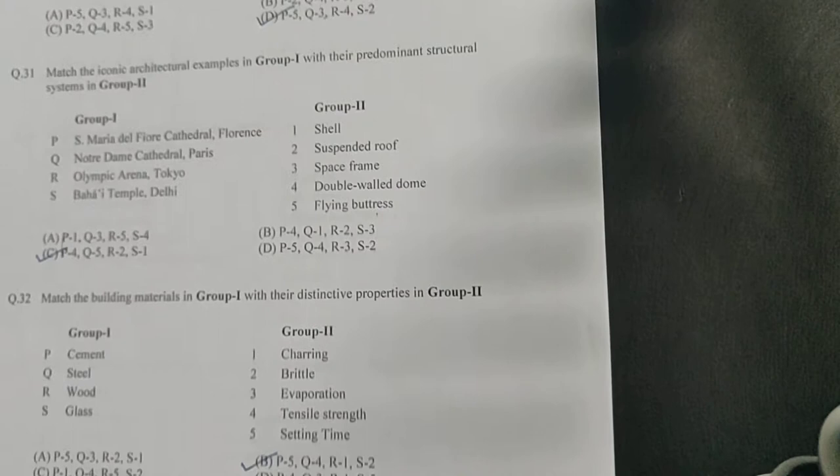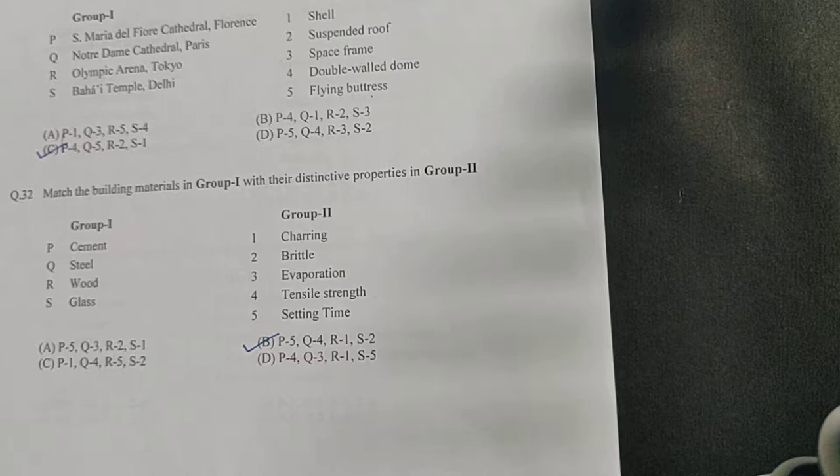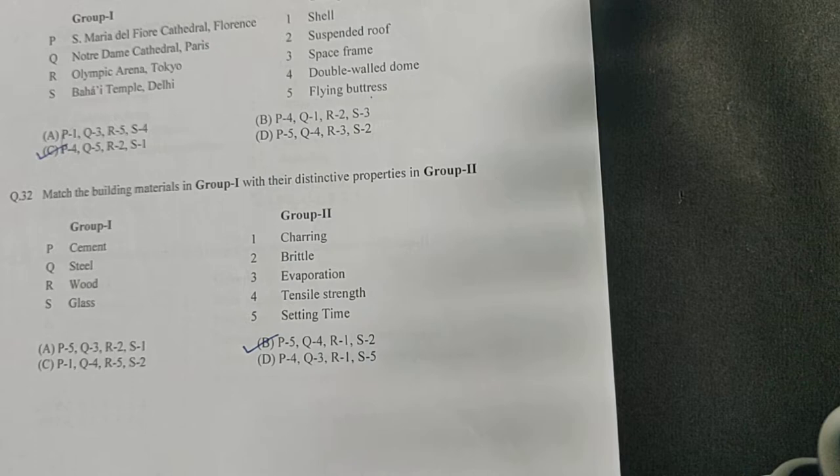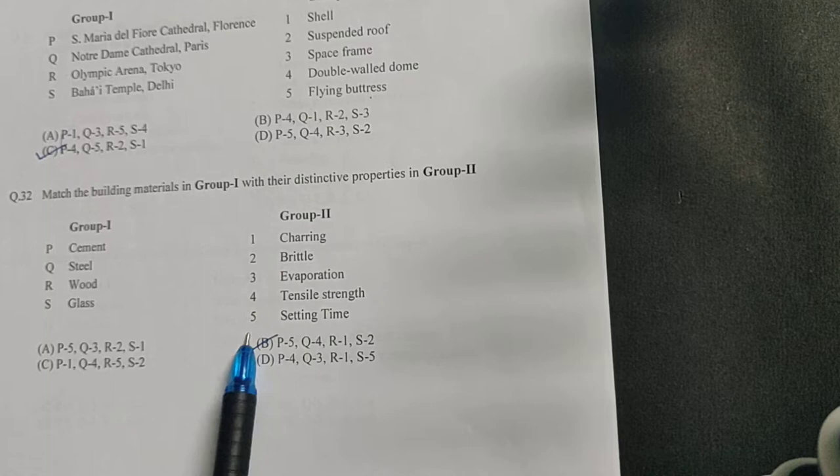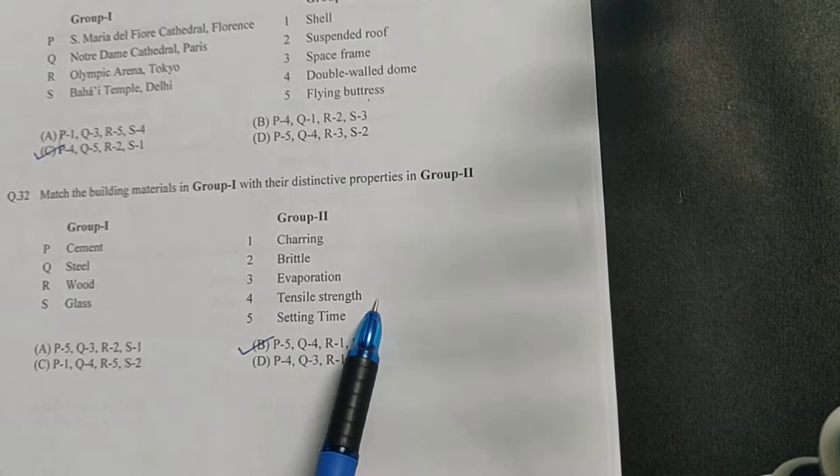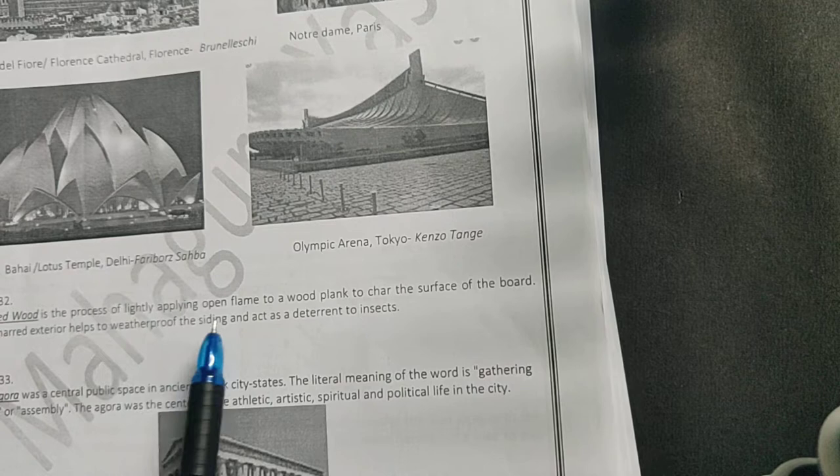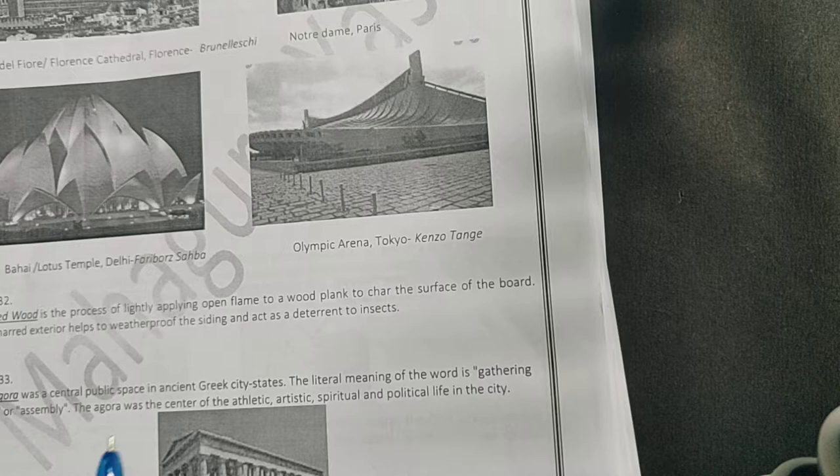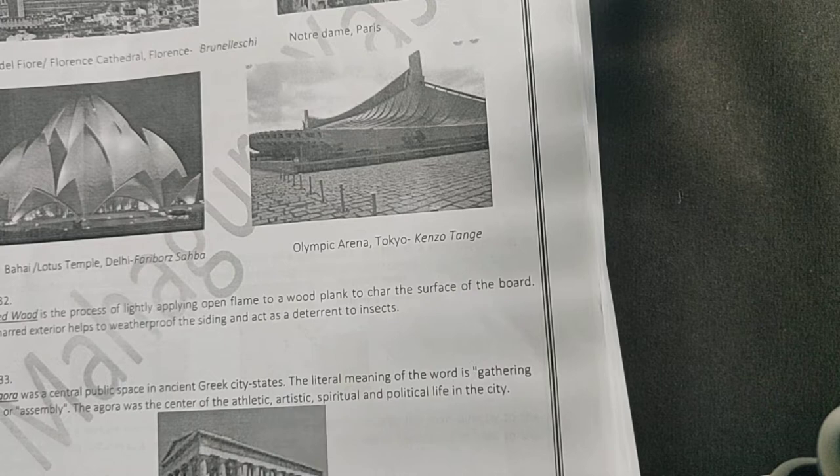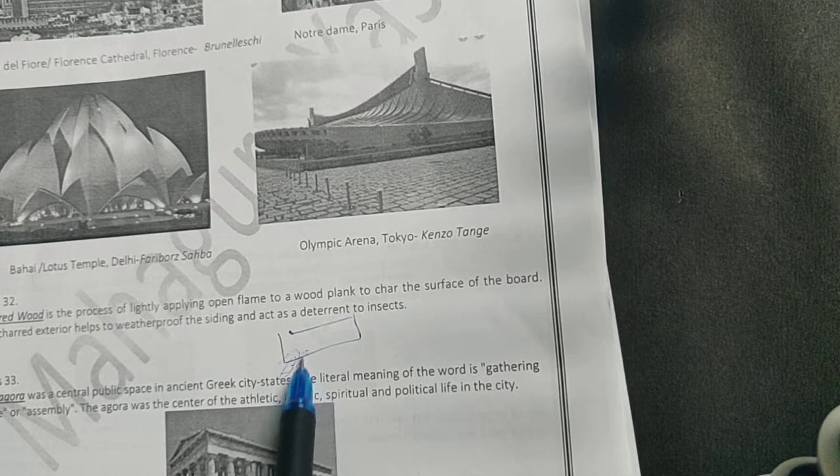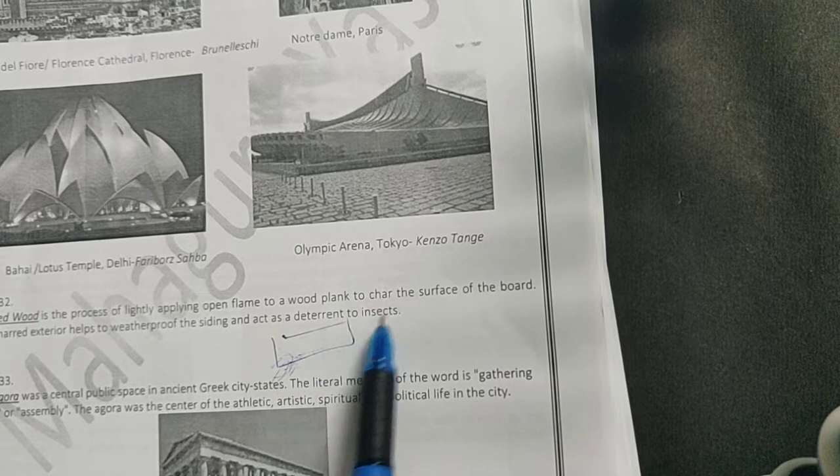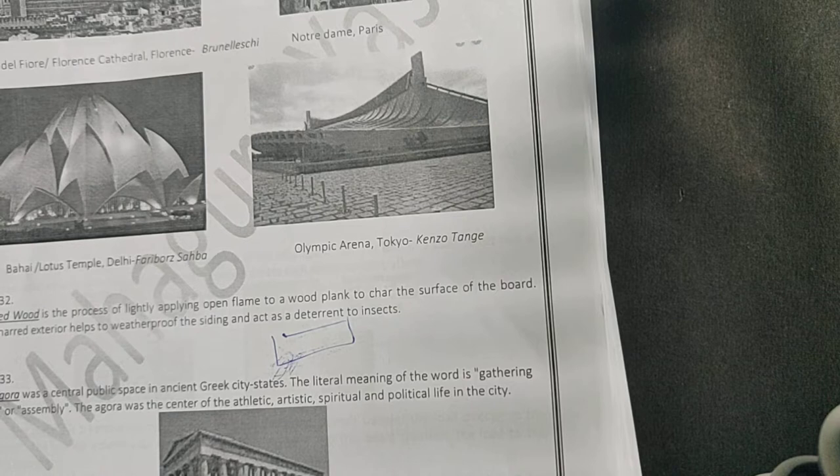Next question. You have a list of building materials and some distinct properties: steel, cement, wood, and glass here, and charring, brittle, evaporation, tensile strength, and setting time. Cement would obviously have the property of setting, steel would have tensile strength, glass is brittle. For wood you have only two options left: charring or evaporation. Evaporation cannot happen, so the answer would be charring. Charring is the process of lightly applying open flame to a wood plank to char the surface. The charred exterior helps to weatherproof the siding and acts as a deterrent to insects.